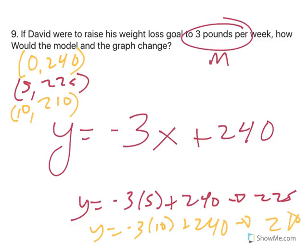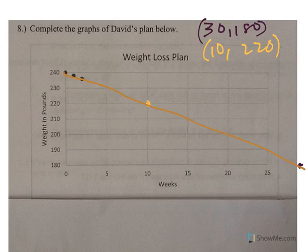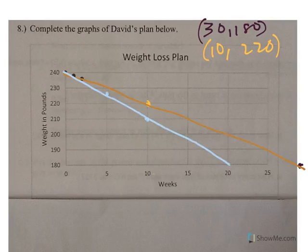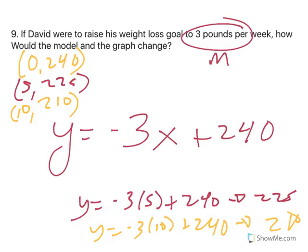So, I can graph these three on and I'll switch to a blue to graph these. So, we're still at 0, 240. At 5 weeks, we're at 225, we said, which is in here. And, at 10 weeks, we're at 210. So, you can see that this graph is a little bit different. He will reach his weight loss plan goal in 20 weeks instead of 30 if he ups it to 3 pounds a week. And, I think that is the end of our plan. Yeah. There you go.